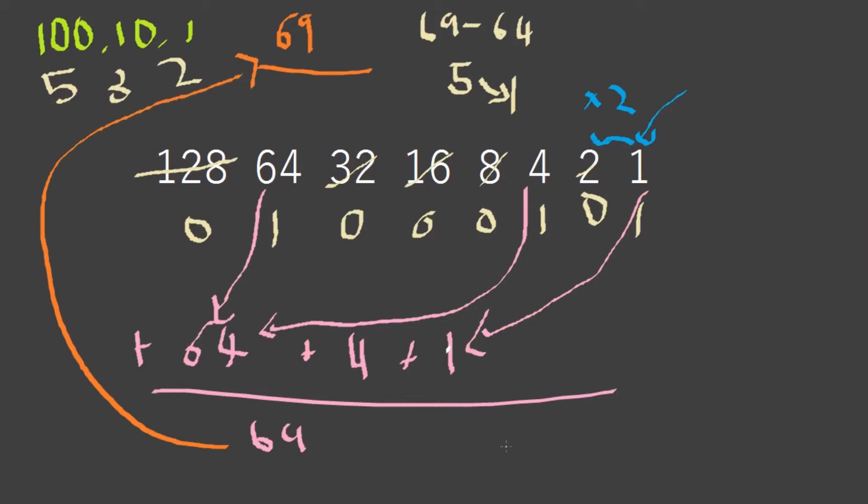That is how you count and convert from a normal number we count in into binary. 01000101 is basically 69 in binary.